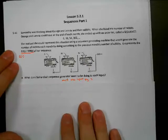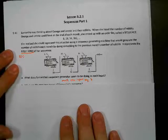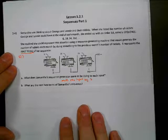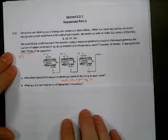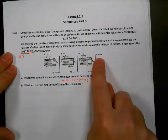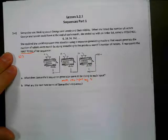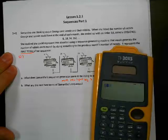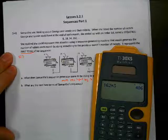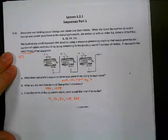We've already pretty much done this on the rabbits scenario — it's one of our situations we're looking at. What are the next two terms of Samantha's sequence? Well, to find the next two terms, 162 would become the input of the next one. I could take 162 and multiply by three to get 486. The one after that, multiply by three again, and I get 1,458. So those are the next two terms.